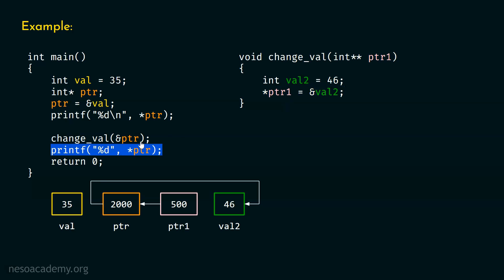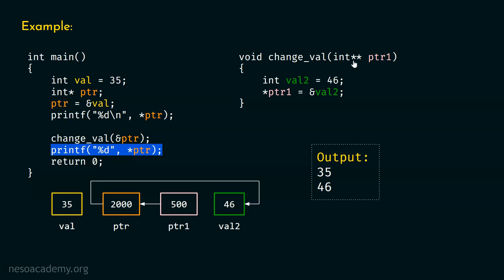After returning back to main, we know that ptr is currently pointing to variable val2. Hence this time the output is 35 and 46. I hope this whole idea of double pointer is clear. Double pointer is a pointer to a pointer — this ptr1 is a pointer to a pointer, and that pointer is a pointer to an integer.